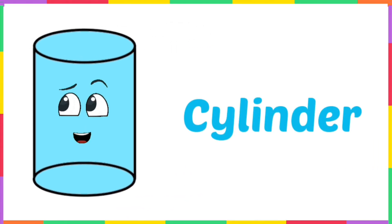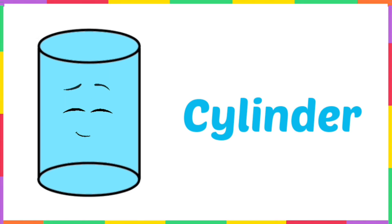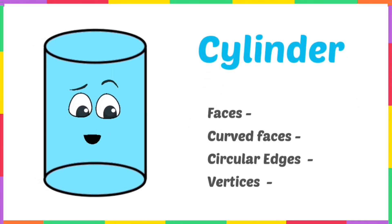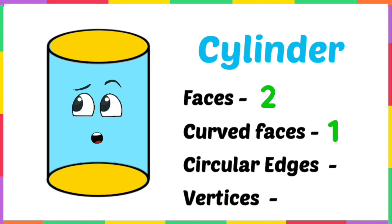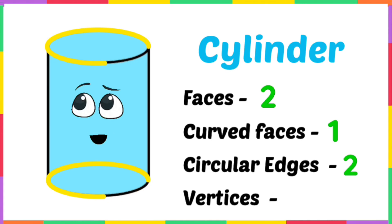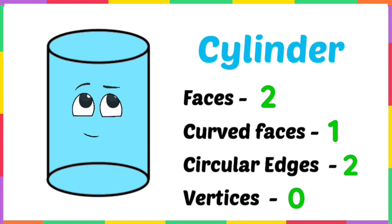Hi, I am a cylinder! I can roll like a log. I am made up of three faces — two circular faces and one curved face. This is my edge — I have two circular edges. I do not have any vertices.